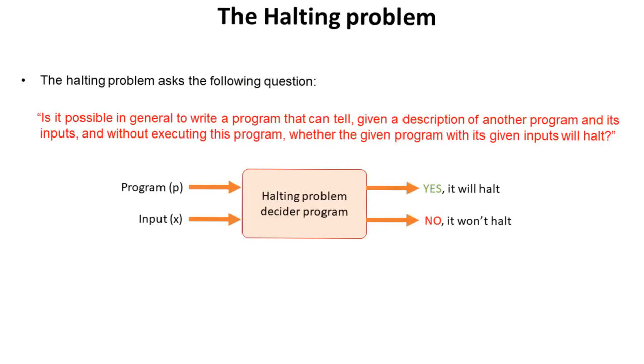The halting problem asks the following question: Is it possible in general to write a computer program that can tell, given the description of another program and its inputs, and without actually executing this program, whether the given program with its given inputs will halt or not?